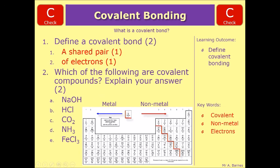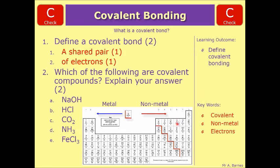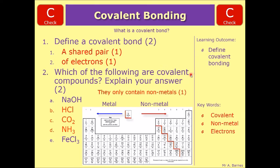Looking at the compounds: NaOH — Na is a metal, O and H are nonmetals, so it's not covalent. HCl — H is a nonmetal, chlorine is a nonmetal, so that is covalent. CO2 — carbon is a nonmetal, oxygen is a nonmetal, so it's covalent. NH3 — nitrogen and hydrogen are both nonmetals, so it's covalent. FeCl3 — Fe is iron, a metal, and Cl is chlorine, a nonmetal, so that one's ionic. The explanation for your answer is: if it's covalent, it only contains nonmetals.